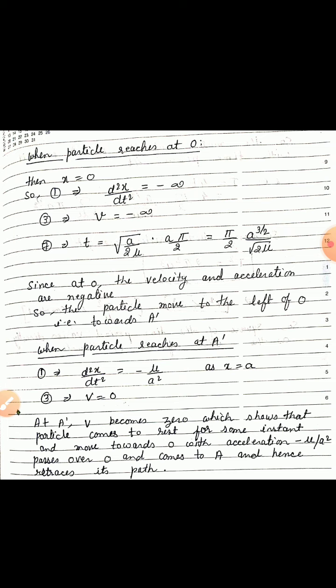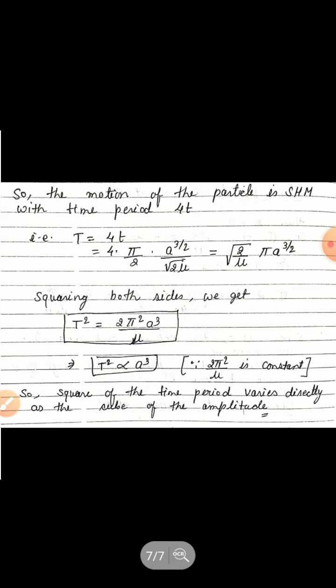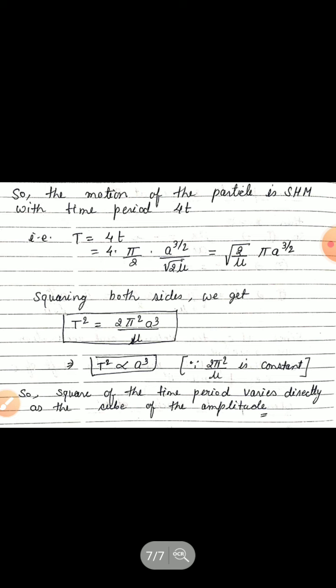When the particle reaches A': equation 1 implies d²x/dt² = −μ/a² (since x = a), and equation 3 gives velocity v = 0. So at A', v becomes 0, which shows the particle comes to rest for an instant, then moves towards O with acceleration −μ/a², passes over O, comes back to A, and hence retraces its path. The motion of the particle is therefore SHM.